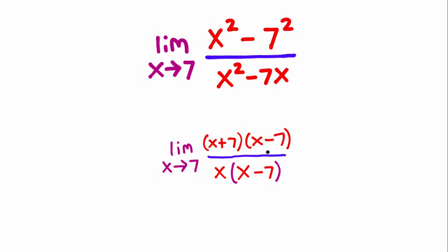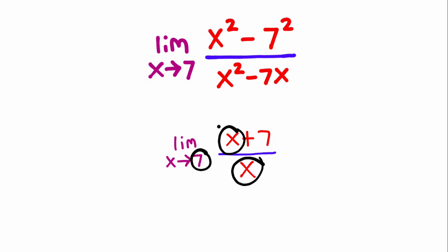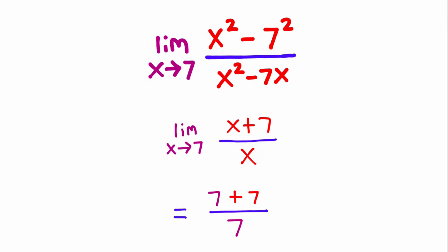Now from here, notice that the two x minus 7s will cancel. So our limit will look like this, and now we can just take this 7 and plug it in for x. So x plus 7 over x will become 7 plus 7 over 7. 7 plus 7 is 14, and 14 divided by 7 is 2. So the answer to this limit is 2.